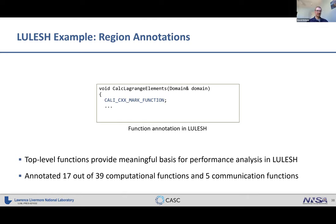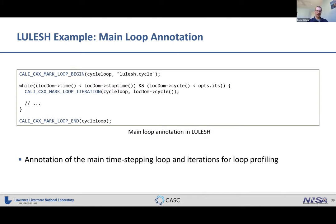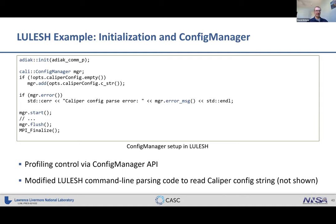In Lulesh, the top-level functions provide a meaningful basis for performance analysis. We used Caliper's function annotation macro to annotate 17 out of 39 existing computational functions and 5 high-level communication functions. The main loop is annotated with Caliper's loop annotation macros, enabling time series profiles for Lulesh. The config manager API is used to read profiling configuration strings from the command line.